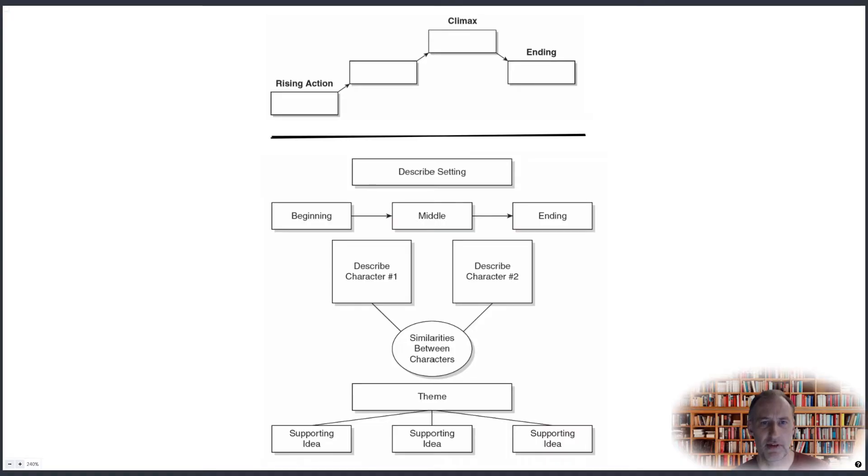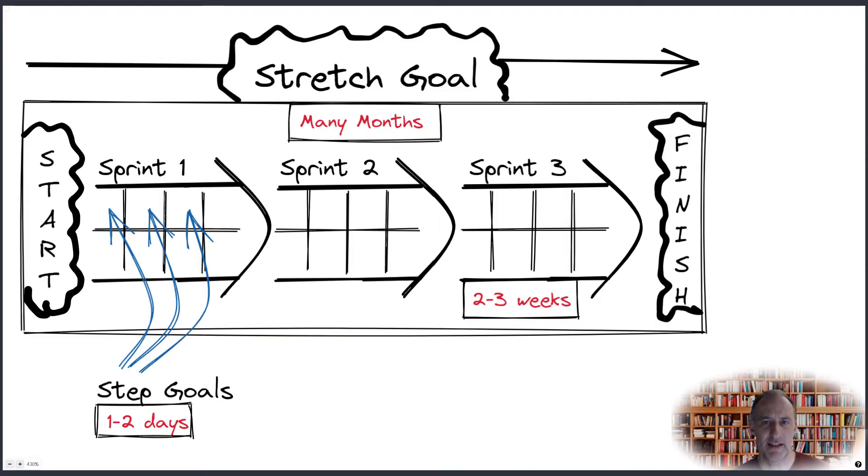Unlike process graphic organizers, which we will look at later. The goal setting template is another example of a content specific organizer to facilitate breaking down a stretch goal into sprints and individual tasks.